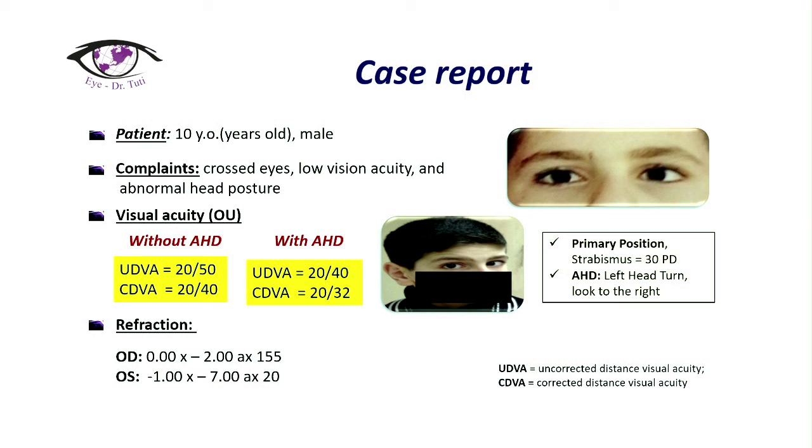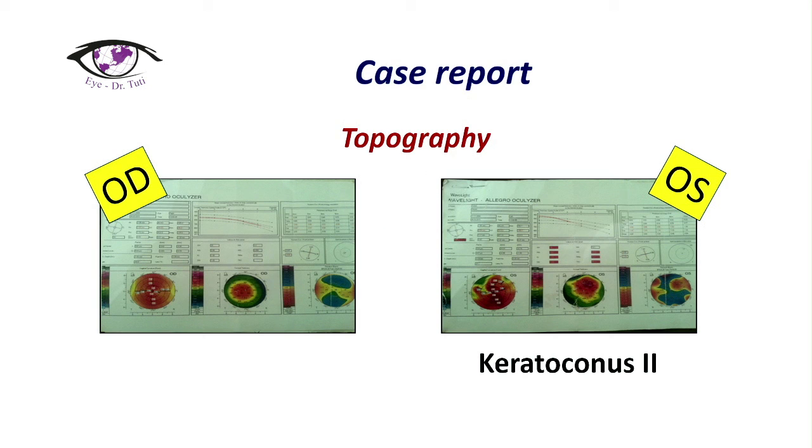Abnormal head deviation was to the left and the gaze was to the right — so the head turn was to the left and the patient was looking to the right. On topography, the left eye showed a typical keratoconus image, stage two. In this age, there is not much we can do. The decision was dynamic control only, hoping it remains stable without progression — we decided not to perform cross-linking and just keep it under dynamic control.